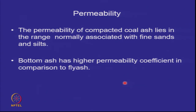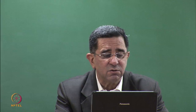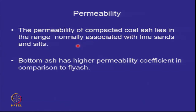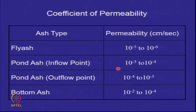Ash is non-plastic, meaning it has no net negative charge like clay particles, so permeability is typically in the range of silts and fine sands. Permeability of compacted coal ash lies in the range normally associated with fine sands and silts. Bottom ash has higher permeability due to its larger grain size. Fly ash, being the finest, has permeability around 10⁻⁷ cm/s — approaching clay range — while pond ash sits in the silt permeability range.